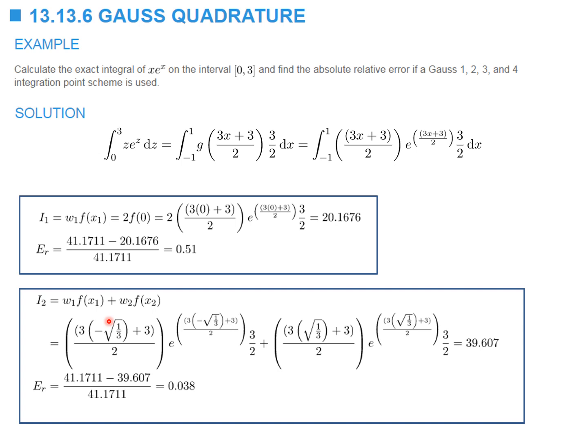As a reminder, if we had used any of the other previously presented integration methods, we would need way more points to achieve such high accuracy. Here, evaluating the function only twice — once at x equals negative 1 over root 3 and once at positive square root of 1 over 3 — already yields very high accuracy.